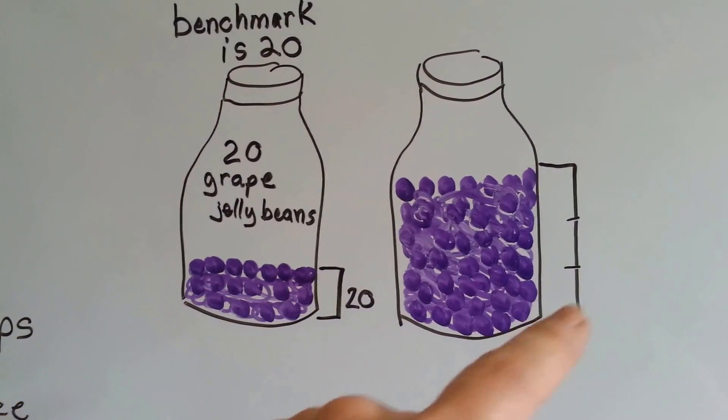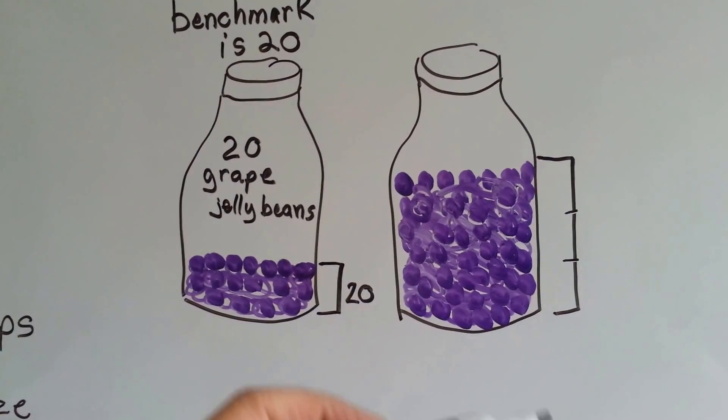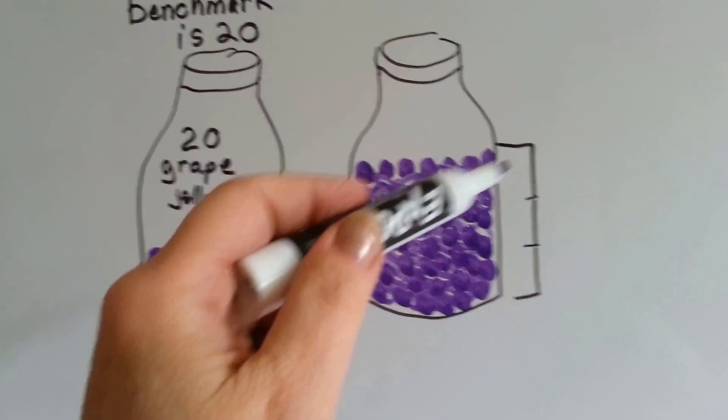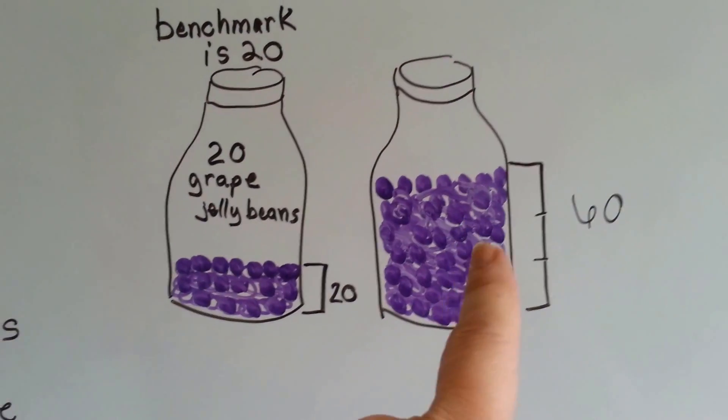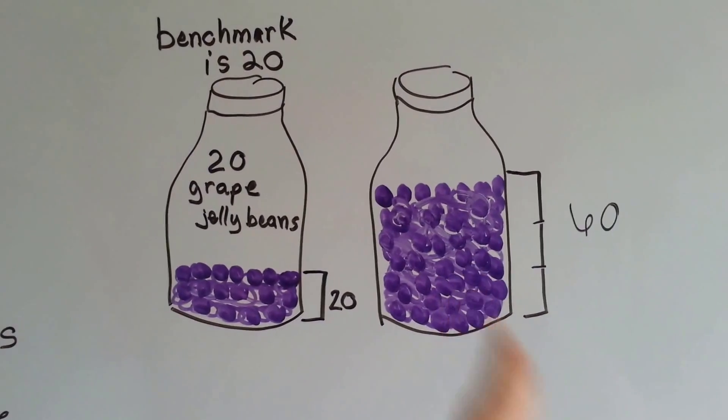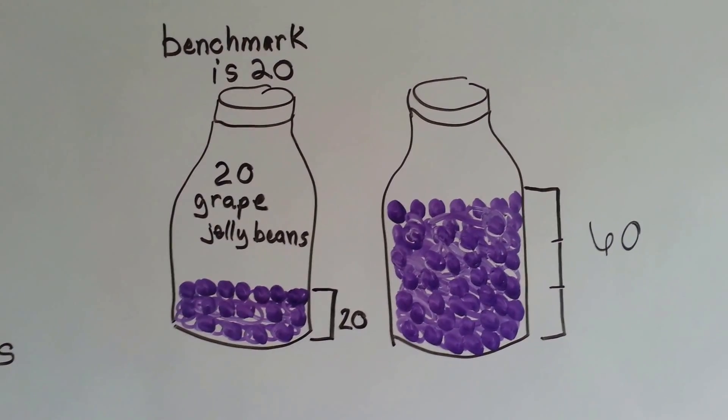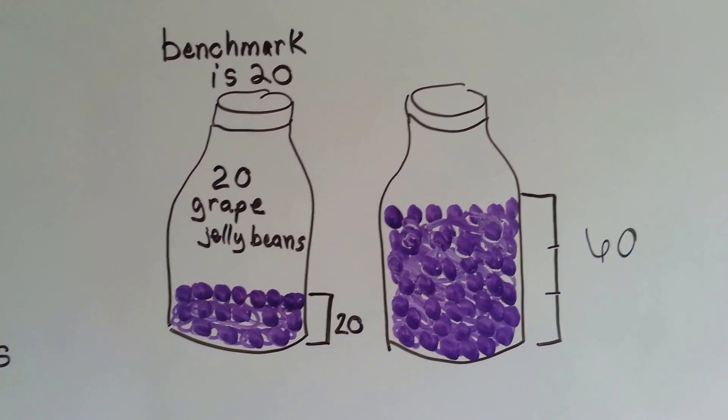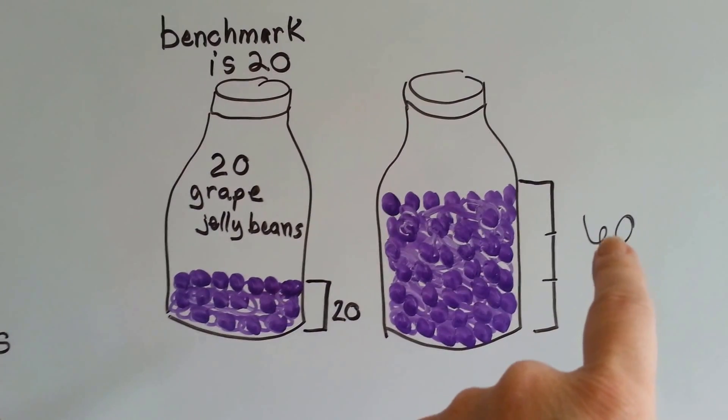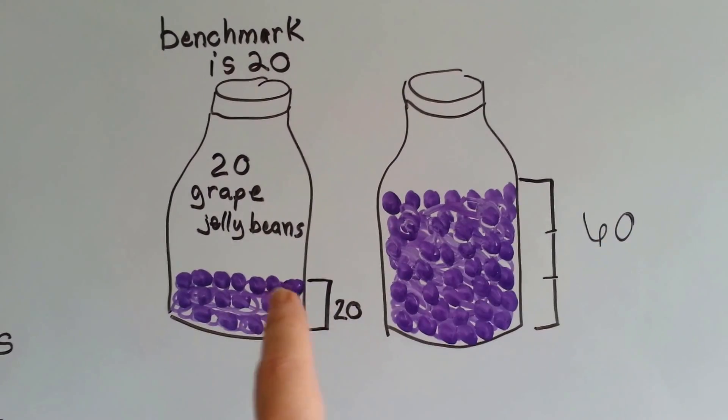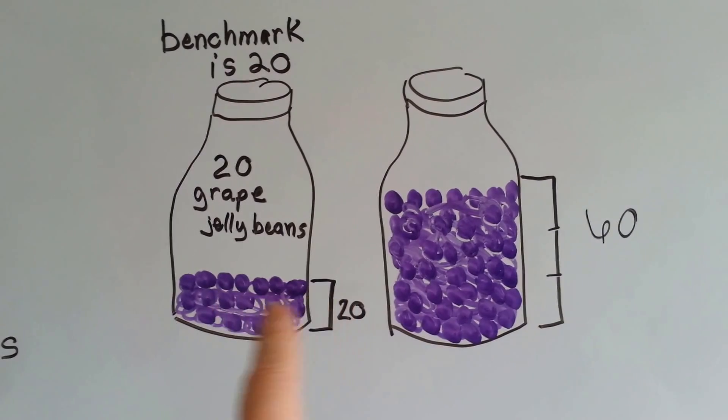If that's 20 and there's three of them here, that means we've got 20, 40, 60 grape jelly beans. Now is there exactly 60 grape jelly beans in this jar? Probably not. It could be 58 or 55 or 63, but it's probably close to 60 because our benchmark is telling us that that amount is 20.